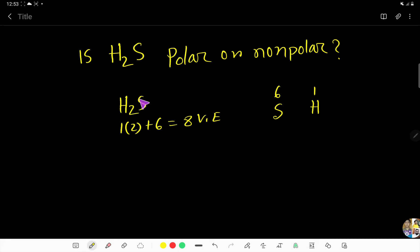This is the formula of hydrogen sulfide. So, hydrogen sulfide has 8 valence electrons. Sulfur has 6 and hydrogen has 1, but here we have 2.